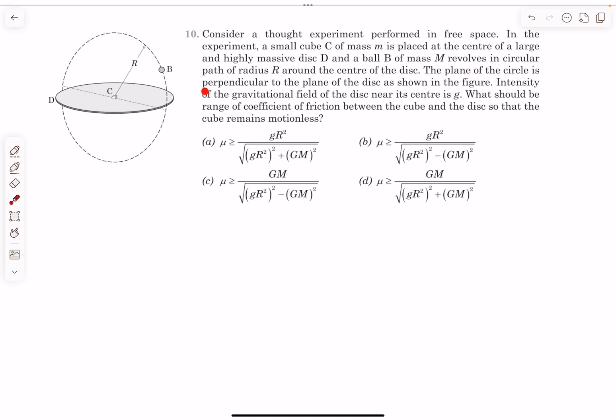The plane of the circle is perpendicular to the plane of the disk as shown in the figure. The tiny cube is placed very close to the center of the disk. The disk is massive and very large, so its radius and mass both need to be taken as pretty large. Particle B is performing circular motion around the disk and its plane of motion is perpendicular to the plane of the disk.